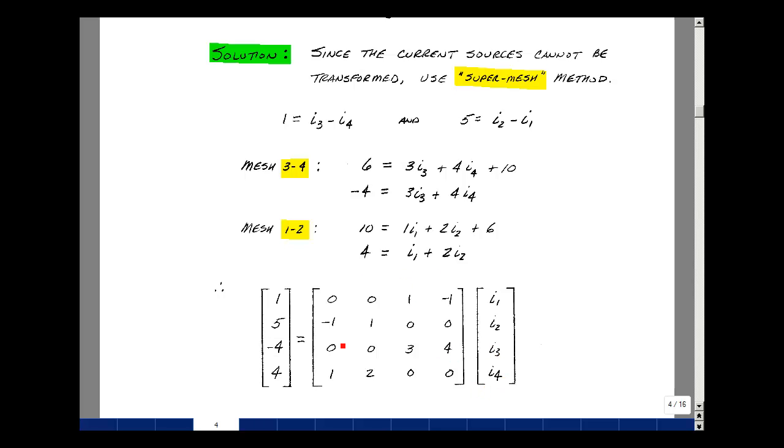Our third equation was minus 4 is equal to 3 times I3 plus 4 times I4. And then lastly, our last equation was that 4 was equal to 1 times I1, so this times this, and then 2 times I2, and then nothing times 3 and 4.